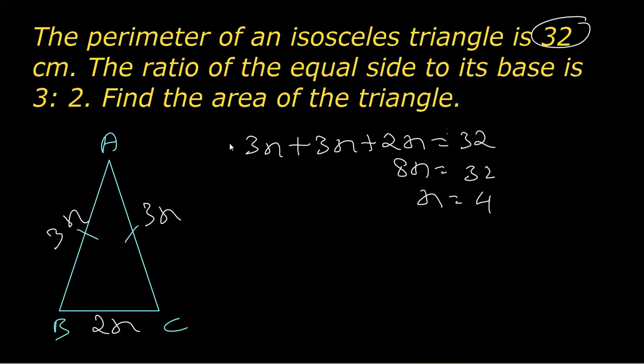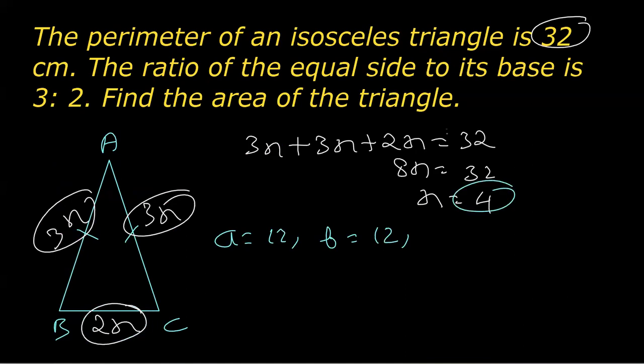Now, once we get the value of x, we can plug in the value of x to get the length of these sides. So I'm taking a as 3x. So 3 times 4 will be 12. Say b the other side, again 3 times 4, that is 12. And the third side, which is 2x, which is 2 times x, which is c is equal to 8.